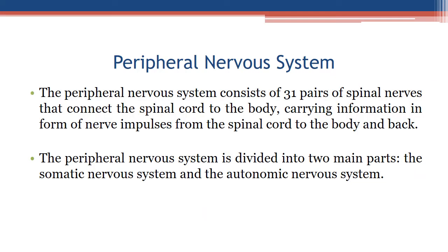Peripheral nervous system: the peripheral nervous system consists of 31 pairs of spinal nerves that connect the spinal cord to the body, carrying information in the form of nerve impulses from the spinal cord to the body and back. The peripheral nervous system is divided into two main parts: the somatic nervous system and the autonomic nervous system.